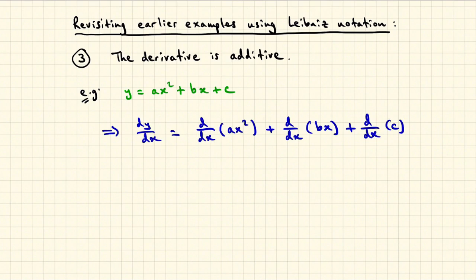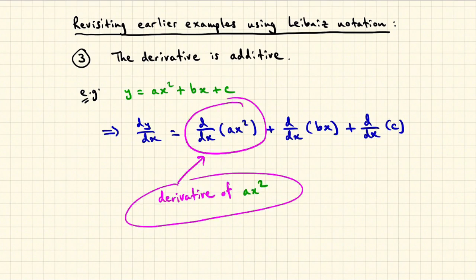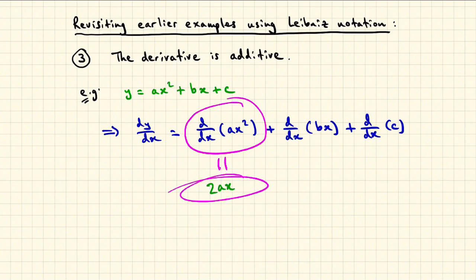then dy dx is the sum of the derivatives of each of the pieces, which can be expressed in this way. So the derivative of ax squared, regarded as the rule for the function that takes x to ax squared, can be rewritten as d dx of ax squared, which is 2ax.